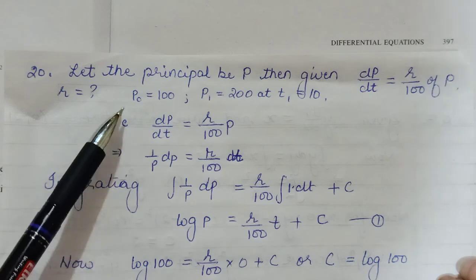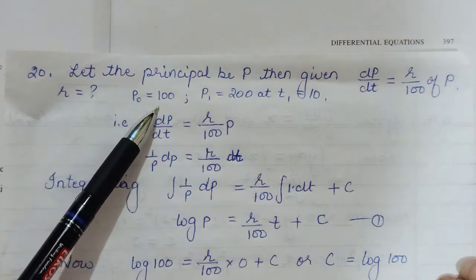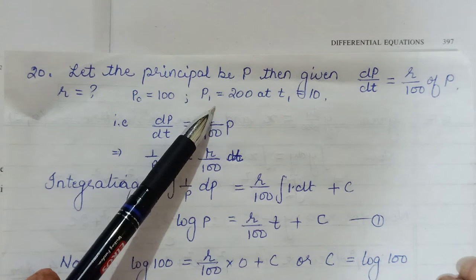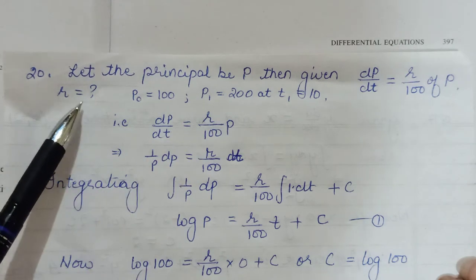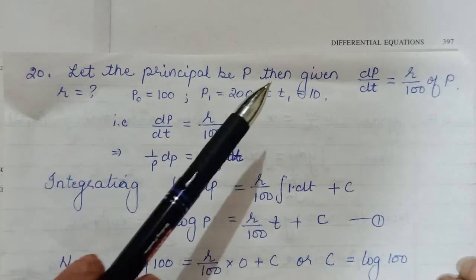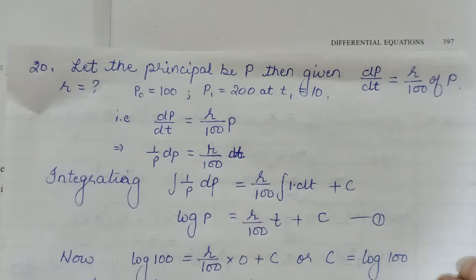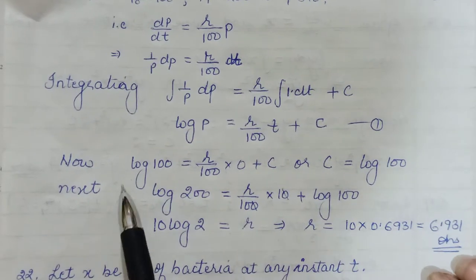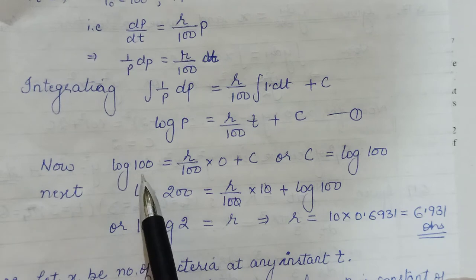Now we need to find this, for which we were given that principal first was 100, later it becomes 200. Initially time is always taken as 0, and second case time was given as 10. So in the first case we will take log of 100.